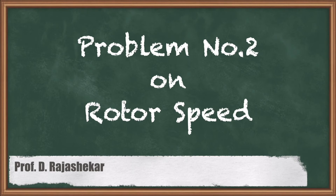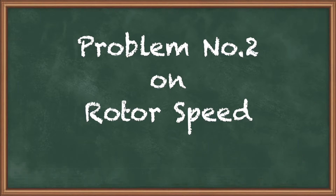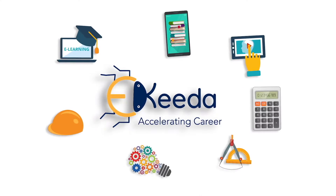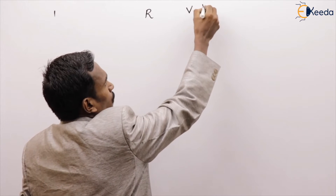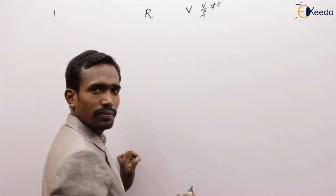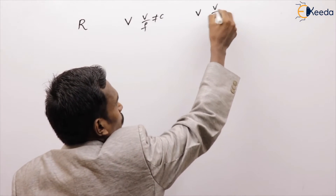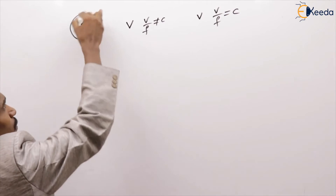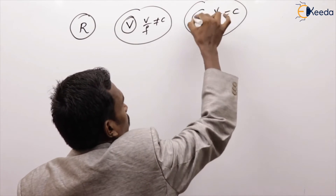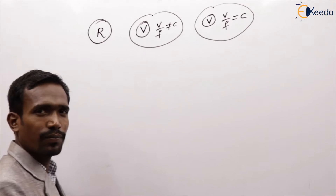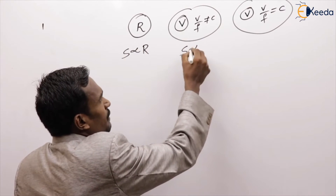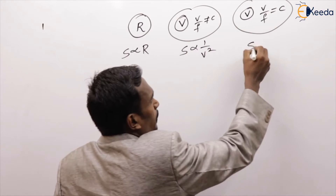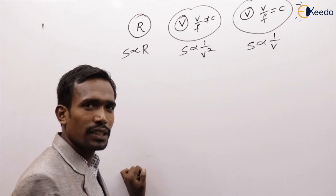In this video we are going to solve problems on rotor speed. Up to now we saw three effects: effect of rotor resistance, effect of supply voltage where V/f is not constant, and effect of supply voltage where V/f equals constant. Slip is directly proportional to rotor resistance, inversely proportional to V-squared, and inversely proportional to V respectively.